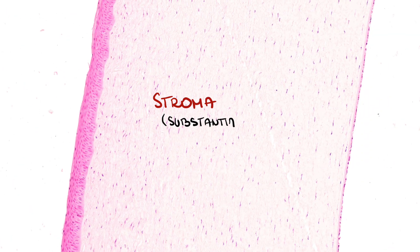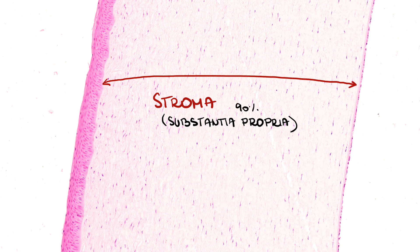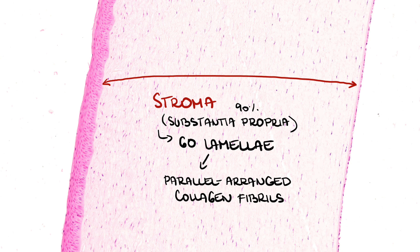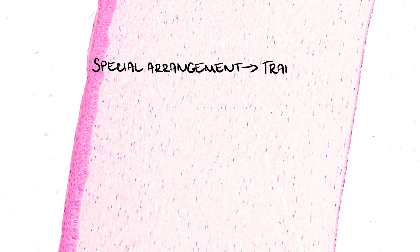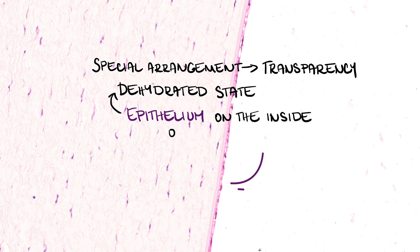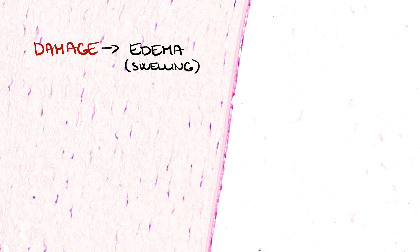The stroma of the cornea — substantia propria — occupies about 90% of its thickness and is made up of about 60 lamellae. Each lamella consists of parallel arranged collagen fibrils, and individual lamellae are arranged perpendicular to each other. The stability of this arrangement is maintained by proteoglycans and collagen type 5. The stroma is composed of specifically arranged collagen fibers with very few cells called keratocytes, which resemble fibroblasts. It is believed that this arrangement is responsible for the transparency of the cornea. It is also important to keep the cornea in a dehydrated state, ensured by the epithelium. As a result of damage, inflammatory cells can migrate into the stroma and edema occurs, manifesting as a lack of transparency.